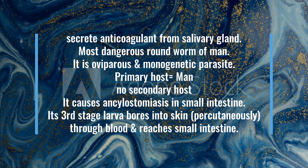It is called a monogenetic parasite, meaning it has one host — man. It is called Ancylostoma, so the disease it causes is ancylostomiasis. It lives in the small intestine. The third-stage larva enters through the skin and travels via blood to the small intestine. It produces anticoagulant so that the wound remains open for a long time.